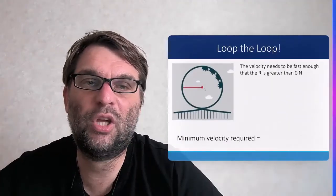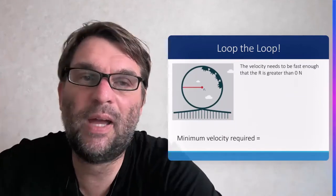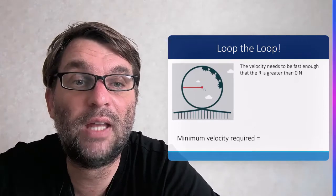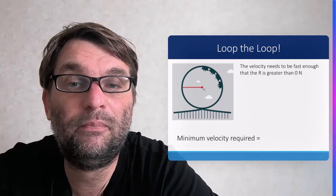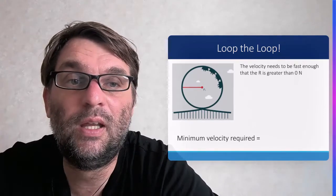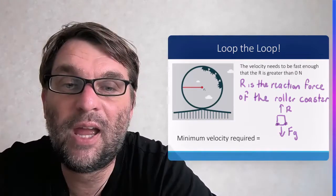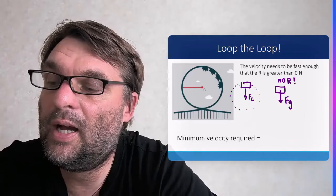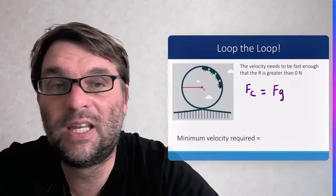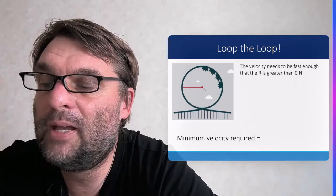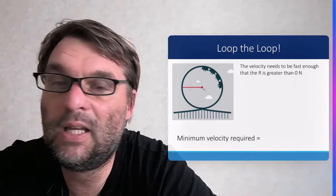What does this mean? The velocity needs to be fast enough so that the normal force is greater than zero Newtons. The centripetal force acts on the carriages in the loop-the-loop. If the normal force equals zero, then the centripetal force equals the force of gravity.